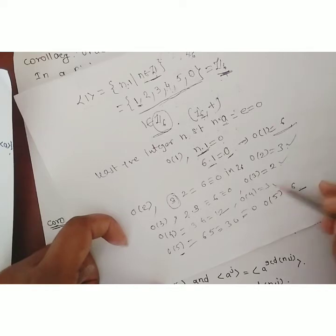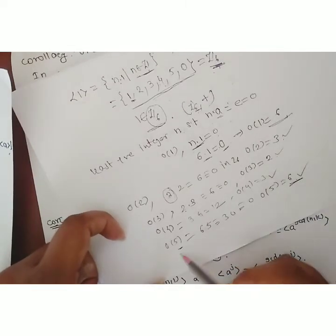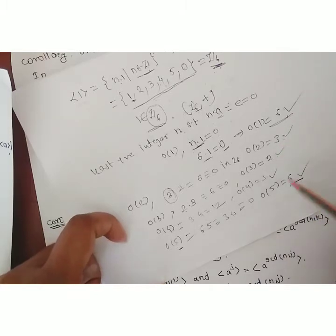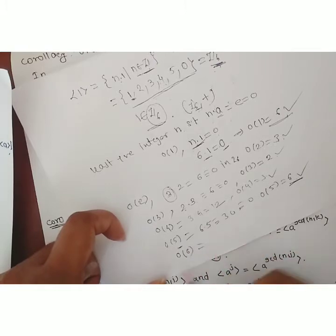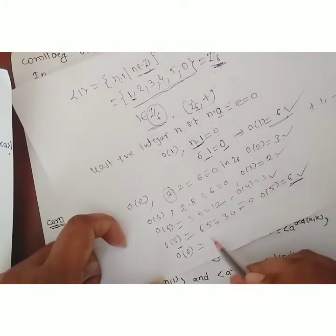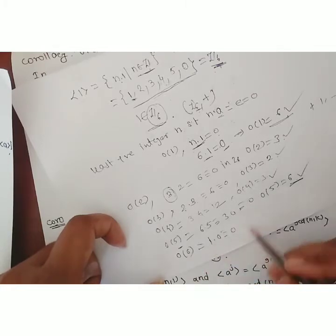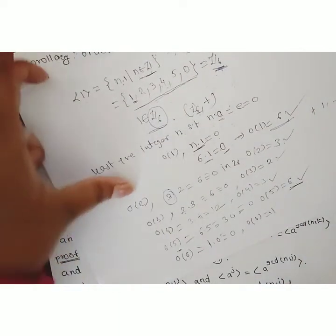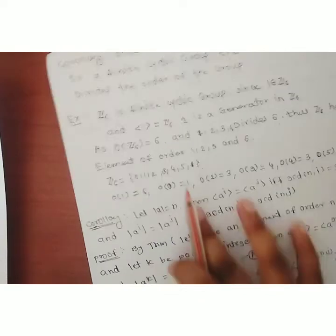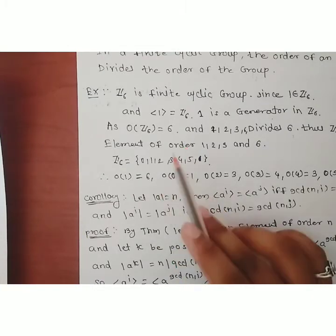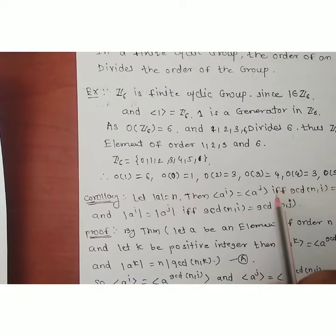For element 0: the least positive integer n with n·0 = 0 is 1, so order of 0 is 1. Therefore the orders of elements in Z6 are: order(0)=1, order(1)=6, order(2)=3, order(3)=2, order(4)=3, order(5)=6. The possible orders are 1, 2, 3, and 6 — each divides the order of the group, confirming the corollary.